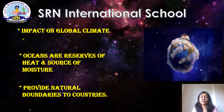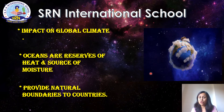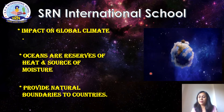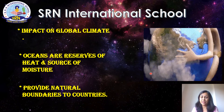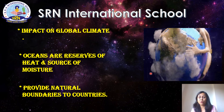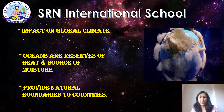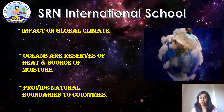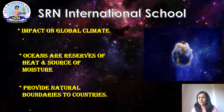Oceans also provide a great source of moisture. Oceans and seas provide a huge amount of water vapor which gets evaporated by the heat of the sun and consequently brings a huge amount of rainfall. Oceans also provide natural boundaries to many countries which are surrounded by sea and oceans.